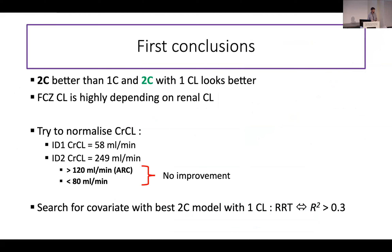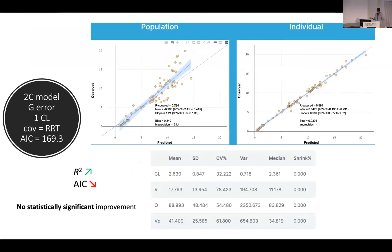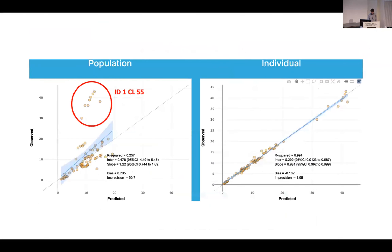We were not comfortable with one clearance because fluconazole was expected to be influenced by renal replacement therapy. We tried normalizing creatinine clearance, but the two patients without RRT had very opposite renal clearances. We also tried using the population median to create two subgroups, but this didn't improve the model. We kept our best two-compartment model and searched for covariates — not surprisingly, renal replacement therapy was statistically significant. However, when added to the model, although the residual error increased, the AIC did not improve significantly, so we could not keep that model.